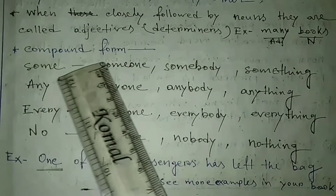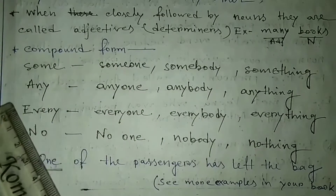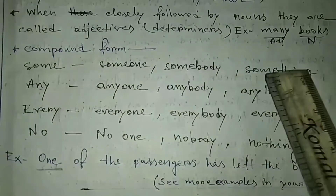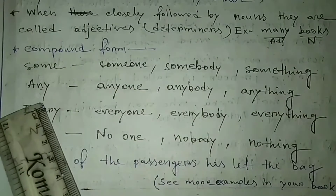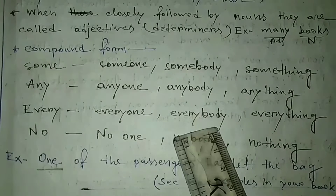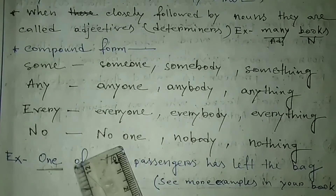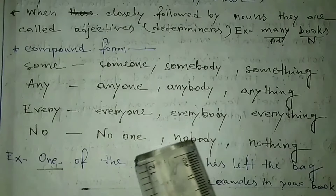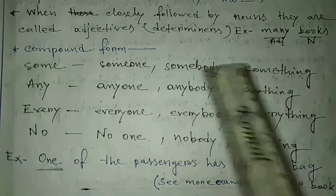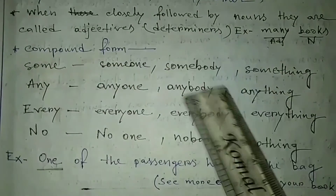Now, compound forms of all these pronouns: some, someone, somebody, something; any, anyone, anybody, anything; every, everyone, everybody, everything; nothing, no, no one — you can write none also — nobody, nothing. So these are the compound forms, and all of these are actually indefinite pronouns.